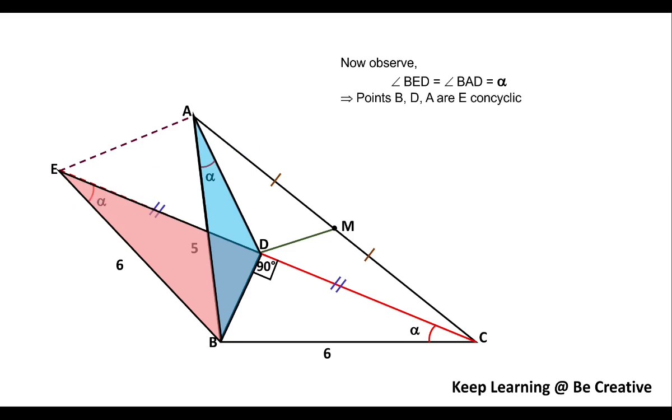By the help of this we can say that points B, D, A, E are concyclic because this BD is subtending equal angles on the same side of this line segment BD. So here you can say that B, D, A, E are concyclic.